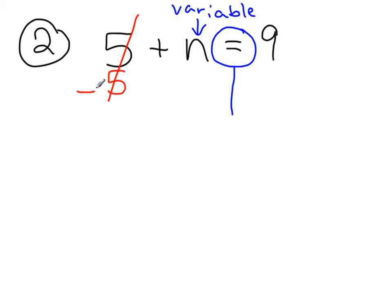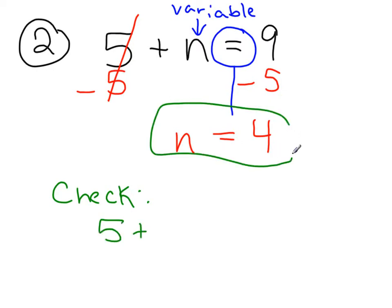But what I do to one side of the equation, I must do the same to the other side. Now, I'm left with n. That's all that's left on the left-hand side. And 9 minus 5 is 4. So if I was in the guess and check world, we can check this by saying, okay, I have 5 plus something. Well, in this case, I found it. I said it was 4.